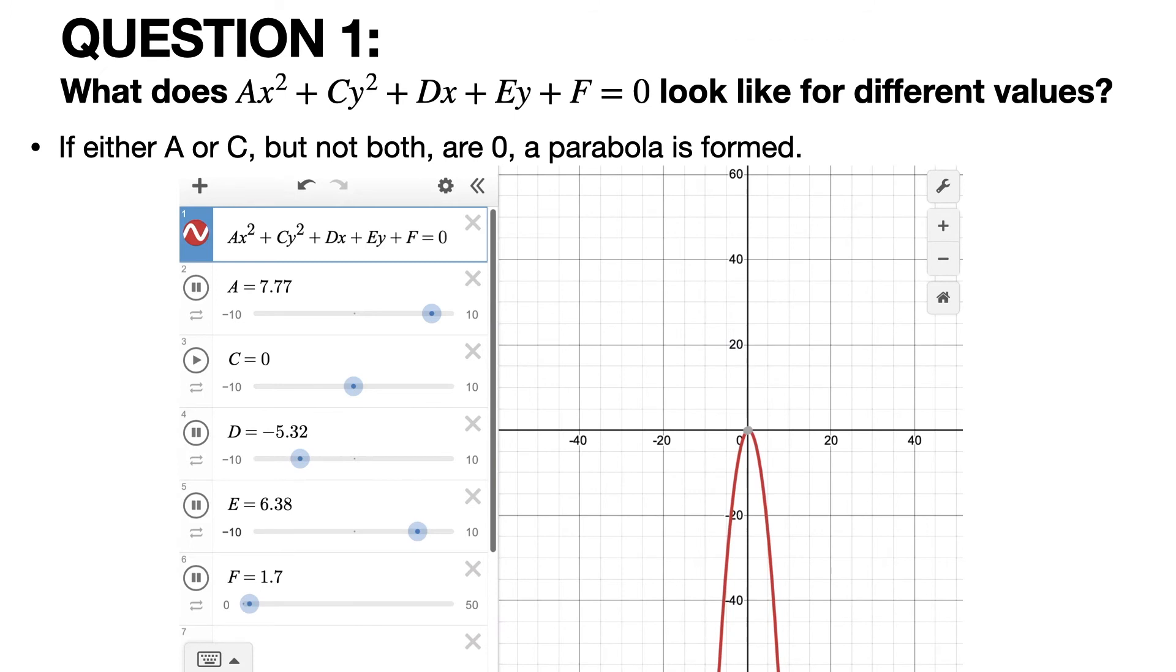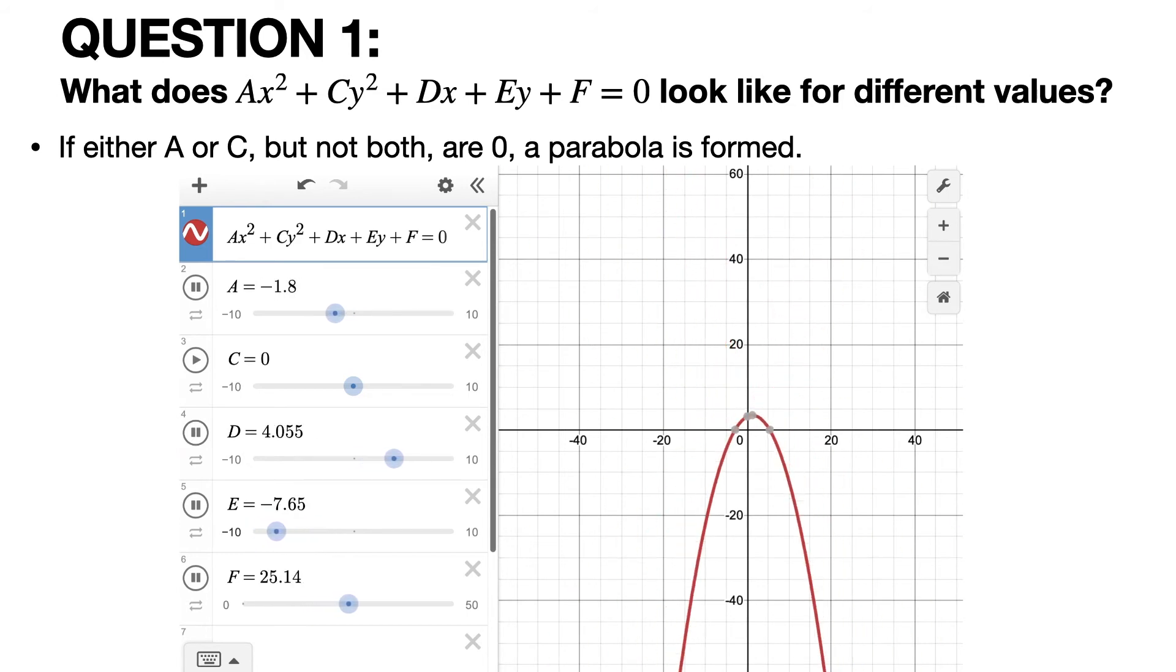If either A or C, but not both, are zero, a parabola is formed. So again, this animation shows what happens when only C is zero, and you get what's known as a vertical parabola. And if A was zero and C was varying, then you'd have a horizontal parabola.